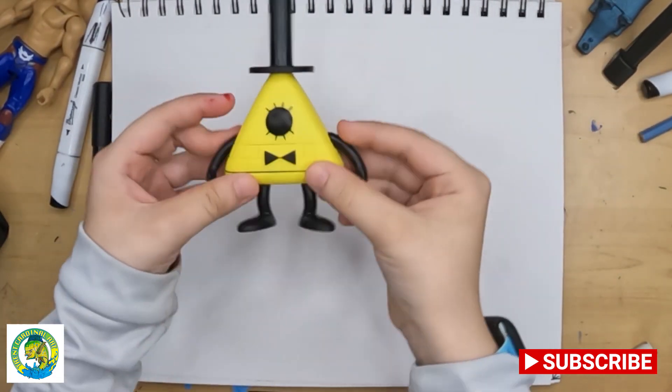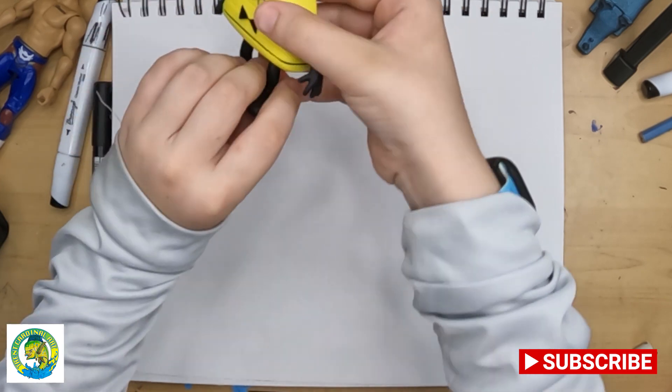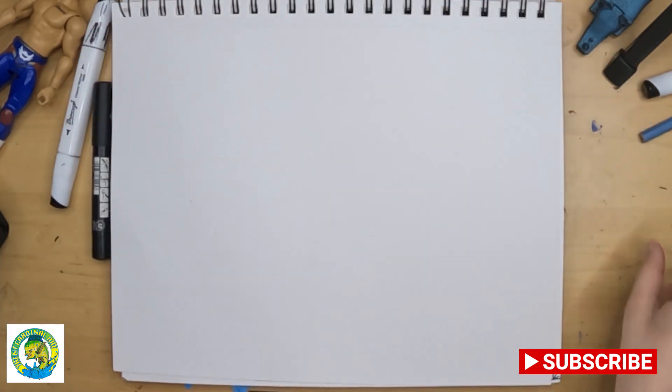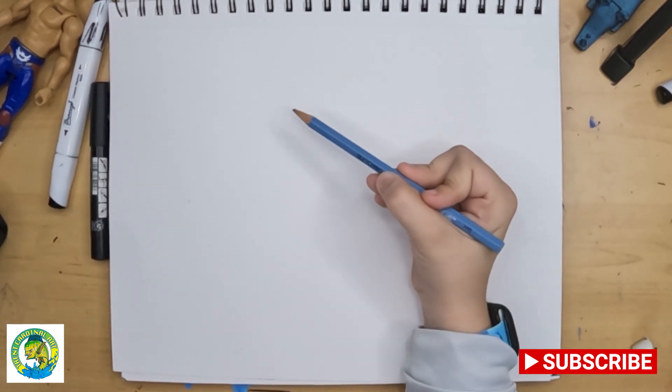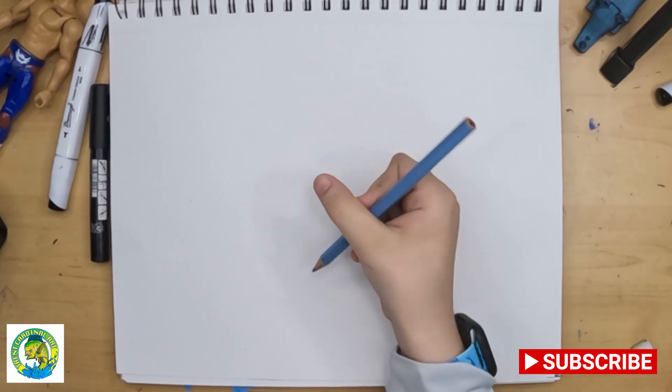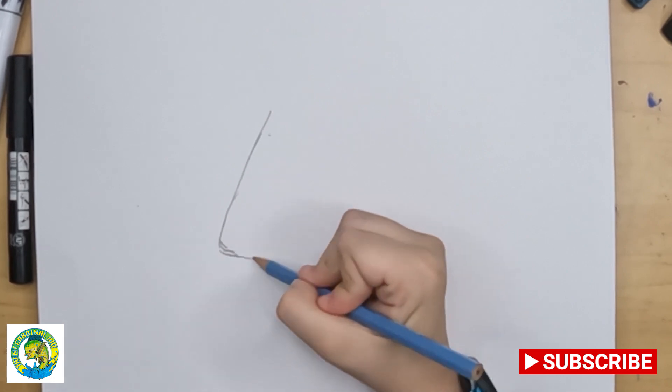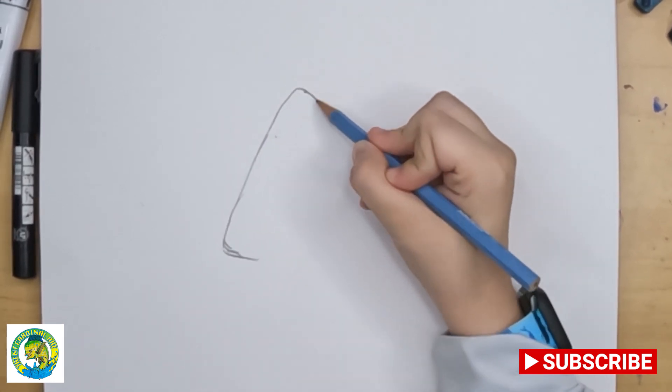Alright, so the first thing I'm going to draw for our Bill Cipher is going to be the triangle head. So we're just going to start with a triangle. But the edges are round. They're not sharp. They're going to be round.